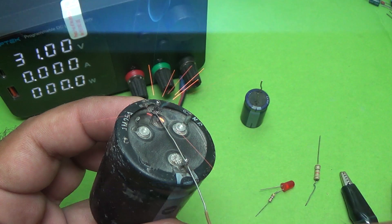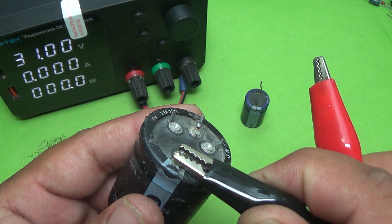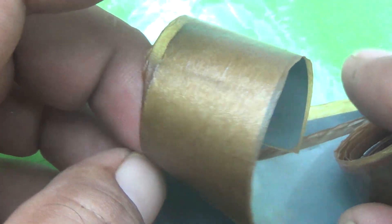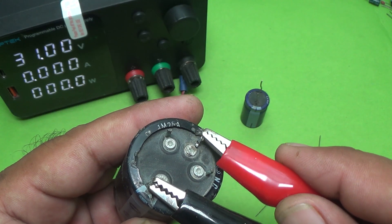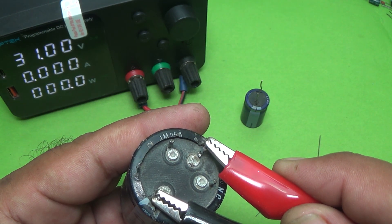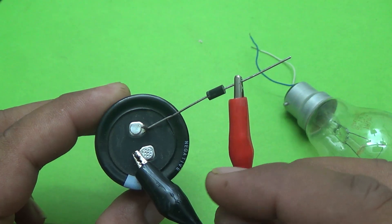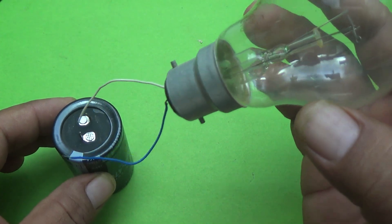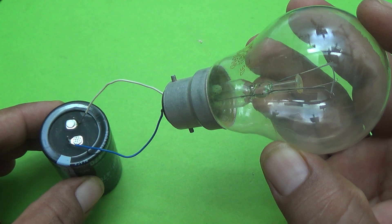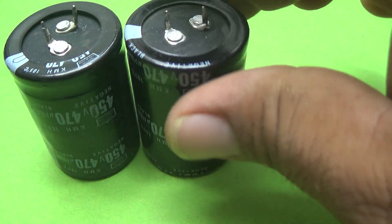No current actually flows through the dielectric. Instead, when voltage is applied, electrons pile up on one plate, creating a negative charge, while the other plate becomes positively charged. This separation of charges creates an electric field — that's where the energy lives. Capacitors can charge and discharge almost instantly, making them super useful in circuits where timing or sudden energy bursts are required.